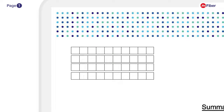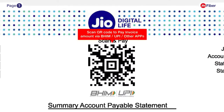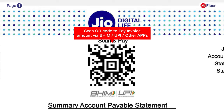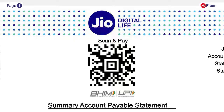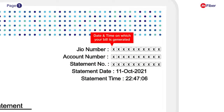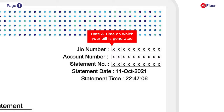On page 1, your name and address will appear first on the top left of the bill. Next to it is the QR code — you can scan this QR code and pay the invoice amount via BHIM UPI or other apps.